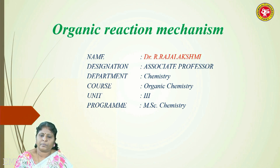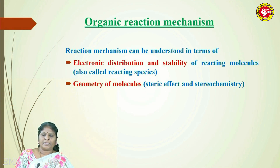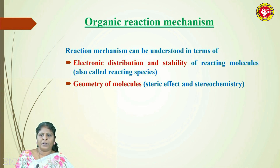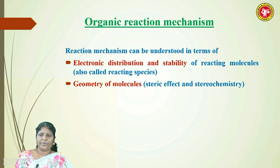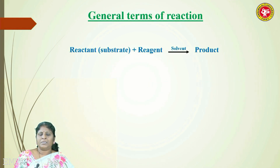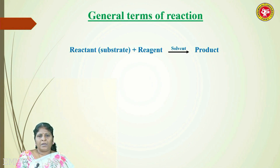Organic reaction mechanism can be understood in terms of two factors. One is electronic distribution and stability of the reacting molecules, also called as reacting species. Another major factor playing a role in reaction mechanism is the geometry of the molecule, which depends on the steric effect and stereochemistry of the molecules.